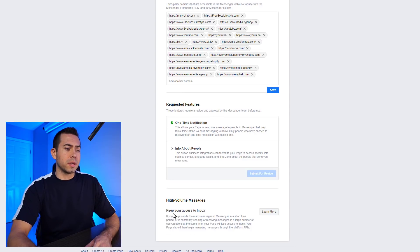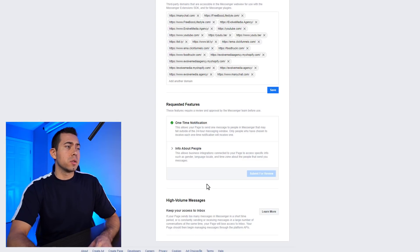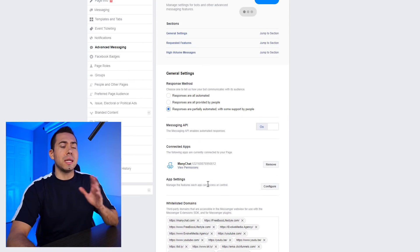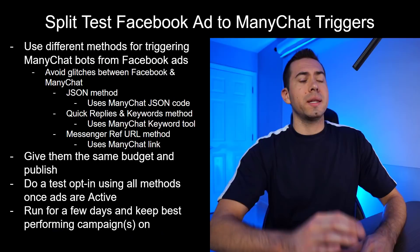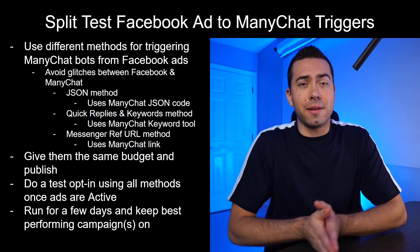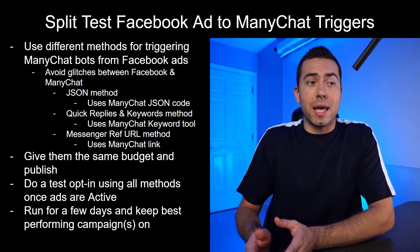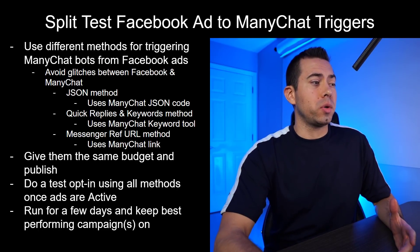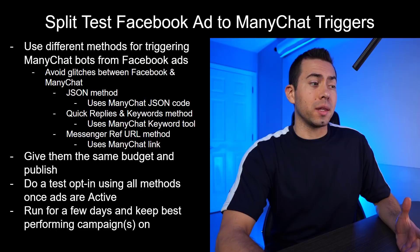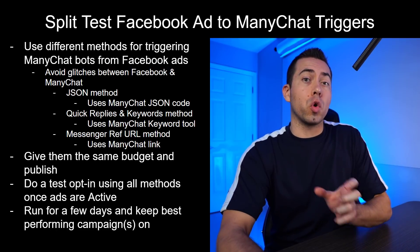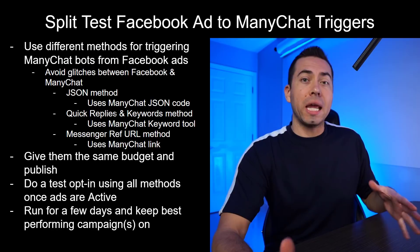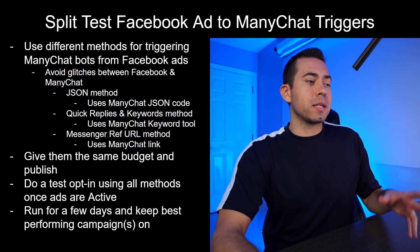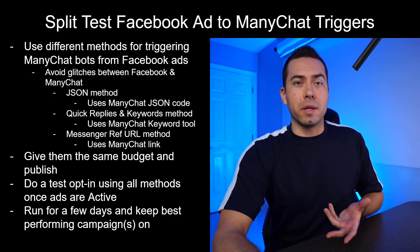Down here, high volume messages — keep your access to inbox, I wouldn't worry about that. So that is pretty much the settings you need to make sure are looking good on your Facebook page. Next, split test Facebook ads to ManyChat with different triggers. The different triggers you can have are the JSON method, which is a ManyChat growth tool; the quick replies/keywords method; and then the Messenger ref URL, which is what I mentioned earlier.